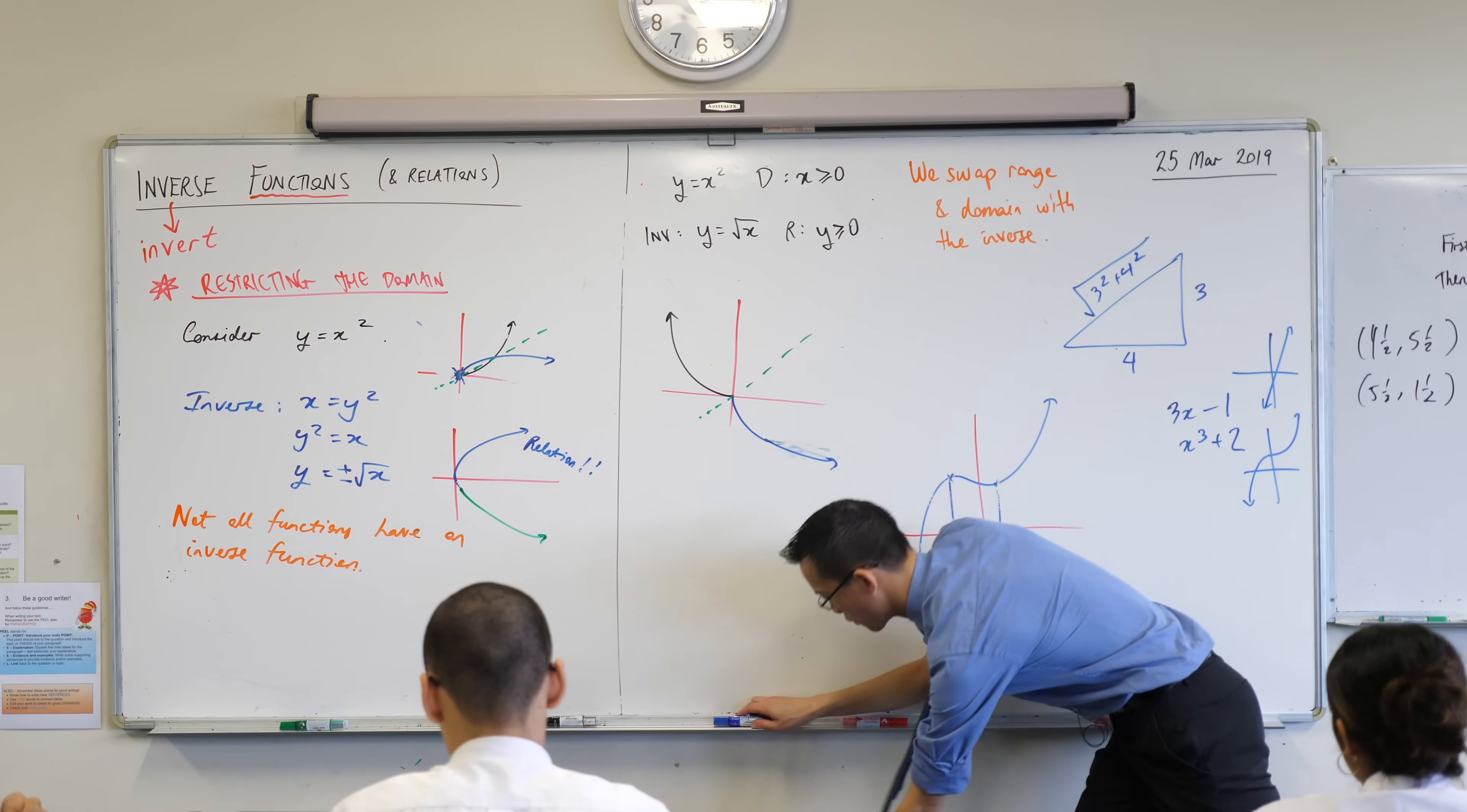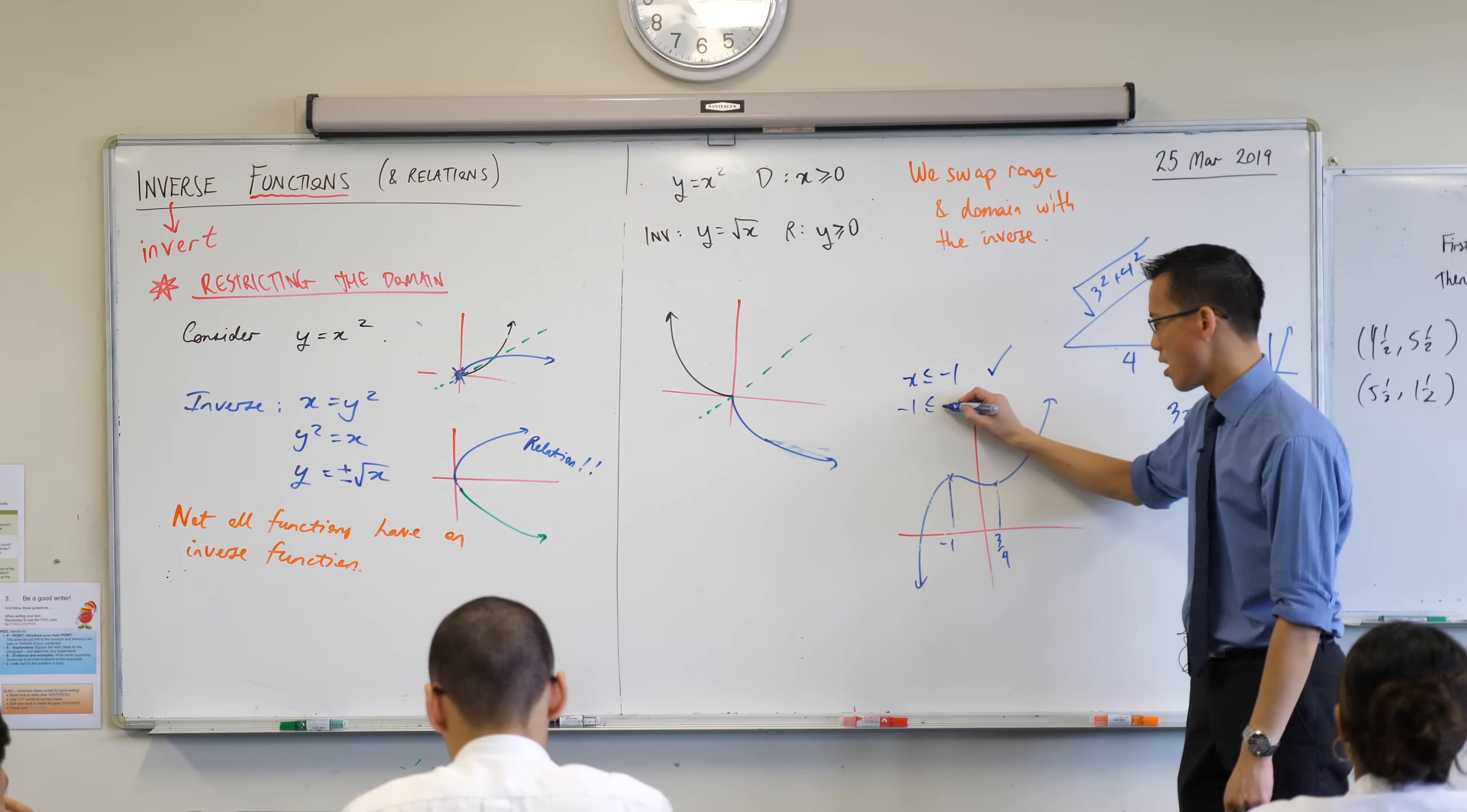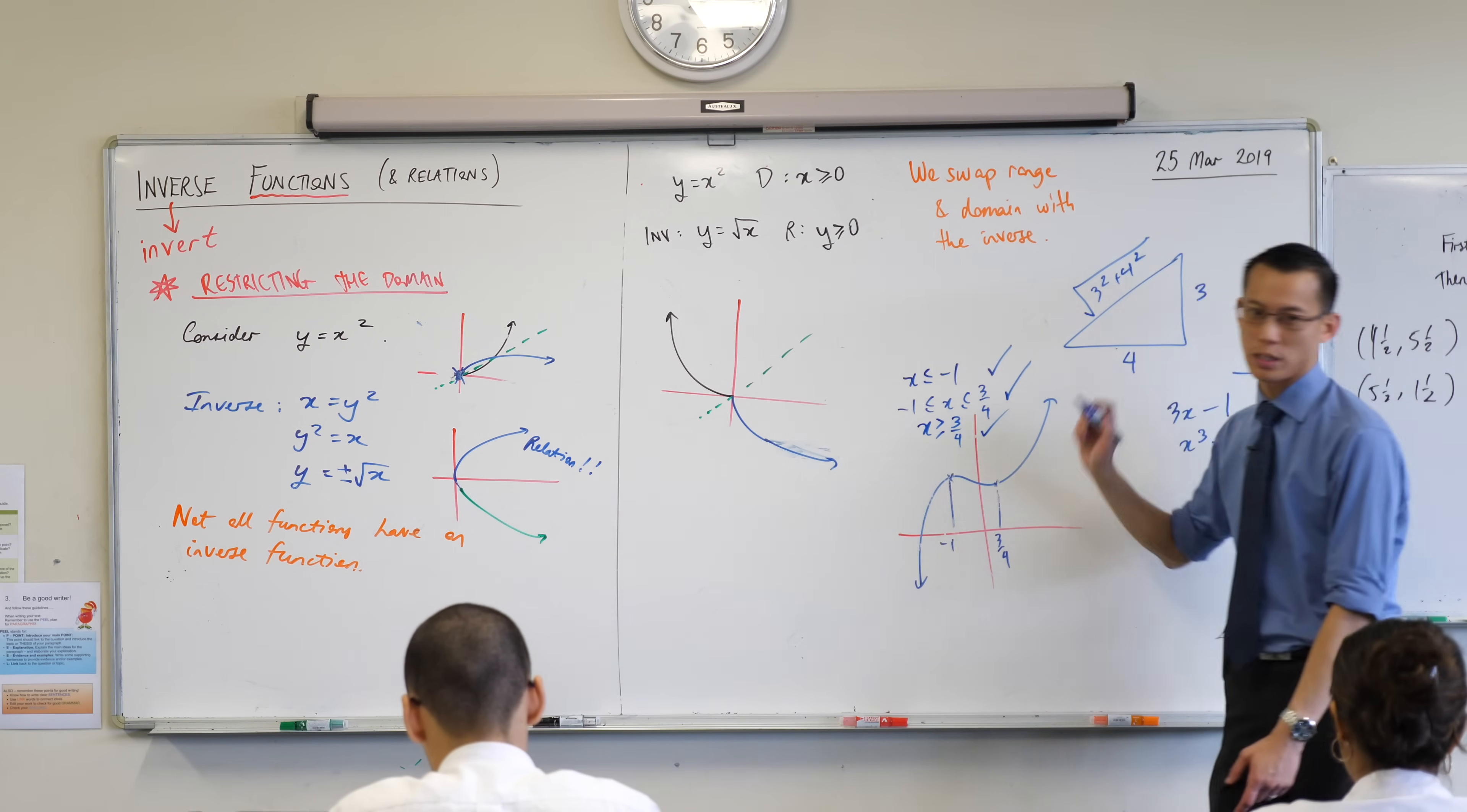So I'm going to write those answers for you just so you know. x is less than negative one. That would give me an inverse function. Between negative one and three over four, that would give me an inverse function. Or to the right of three over four. That would also give me an inverse function.